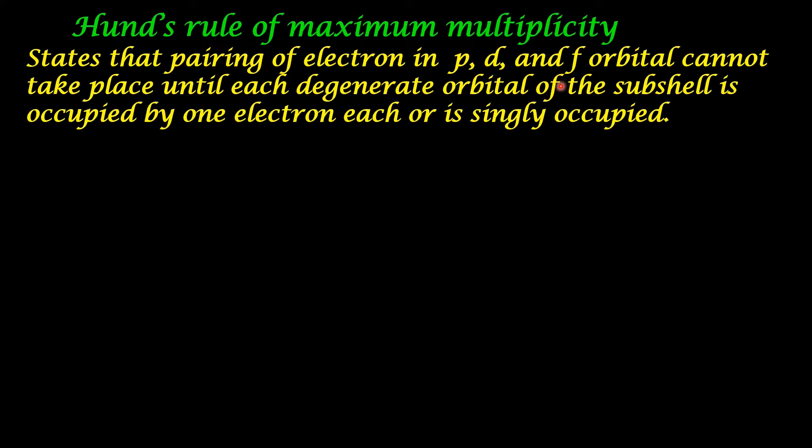So when electrons are distributed, the degenerate orbitals should be first filled by one single electron first. They should be singly occupied. Then only pairing can start. Now let us see what is maximum multiplicity.